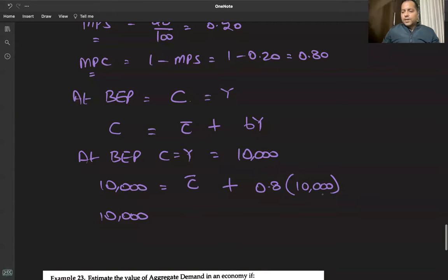10,000 minus 8,000 equals C bar. So C bar is equal to 2,000.